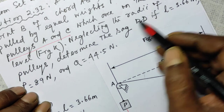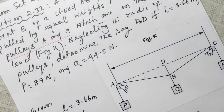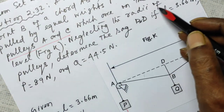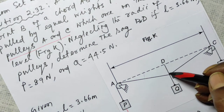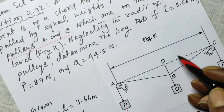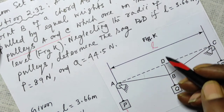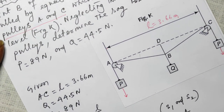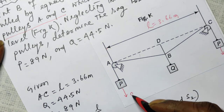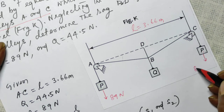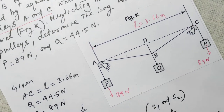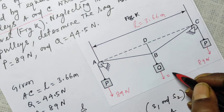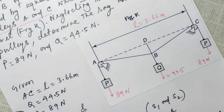Neglecting the radius of the pulleys — meaning there is no torque — we have to determine the sag BD. From B to D is how much, if l = 3.66 meters. The value of P is equal to 89 newtons on both sides, and the value of Q is equal to 44.5 newtons.